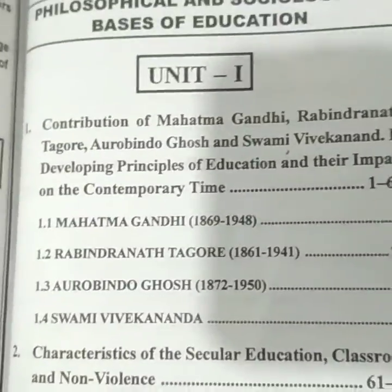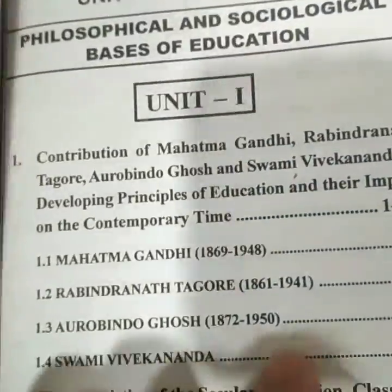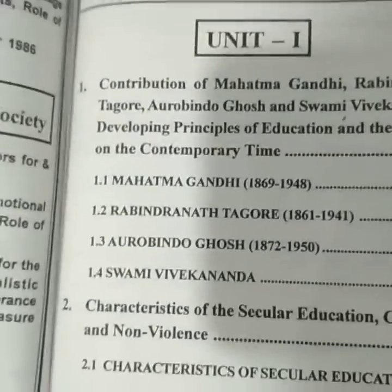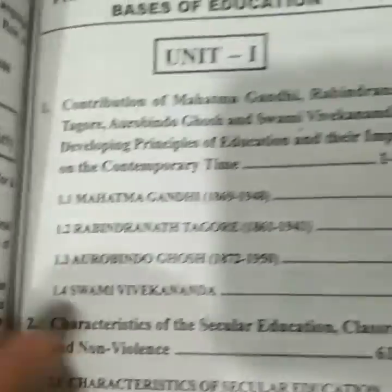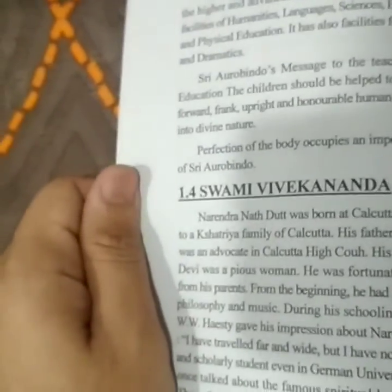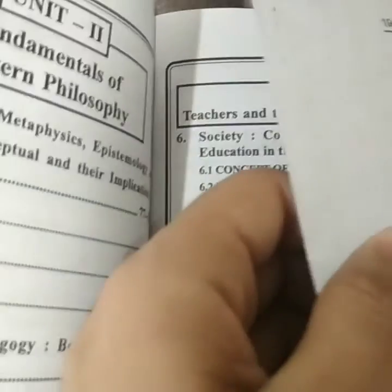The next question is whether the page numbers listed in the contents are accurate — does the content actually exist at those page numbers? Let's check. For example, in Unit 1, Swami Vivekananda is listed on page 46. Let me check — yes, on page 46 there is Swami Vivekananda. You can check others also. In Unit 2, the topic 'Behaviouralism' is listed on page 119. Let's check page 119.